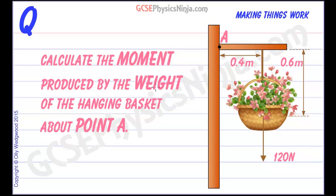Calculate the moment produced by the weight of the hanging basket about point A. So in this situation point A is our pivot. And we have the hanging basket which is exerting its weight force downwards, that's 120 newtons.